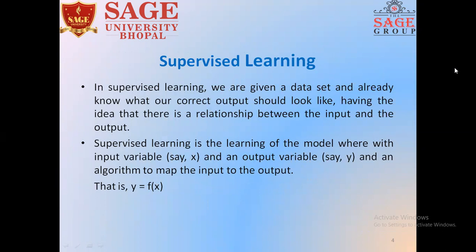In supervised learning, we are given a data set and already know what the correct output should look like, having the idea that there is a relationship between the input and the output. Supervised learning is the learning of a model with an input variable x and an output variable y, and an algorithm to map the input to the output. So y is a function of x. Our task is to predict y based on the given input variable x.